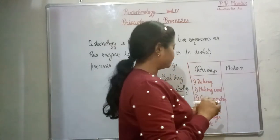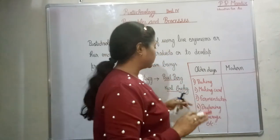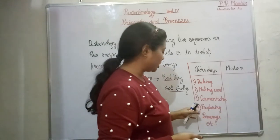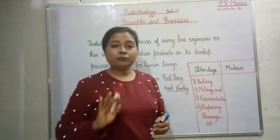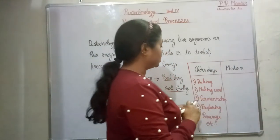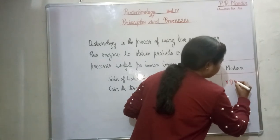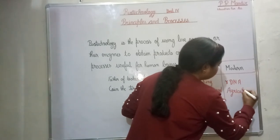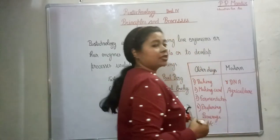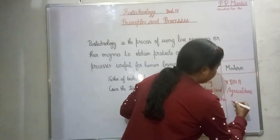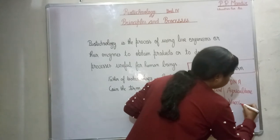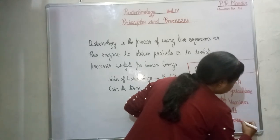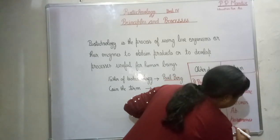In older days, we were also using biotechnology, but at that time we used it for baking, making curd, fermenting dough, preparing idli and dosa, and preparing beverages. In modern days, we are using biotechnology as rDNA — that is, recombinant DNA — in agriculture, and in preparing vaccines, antibiotics, hormones, and enzymes.